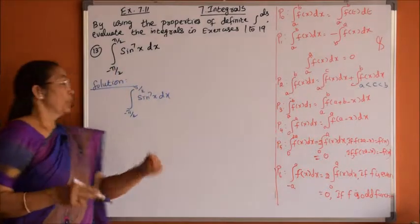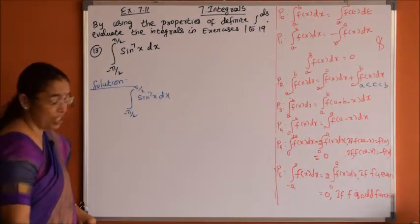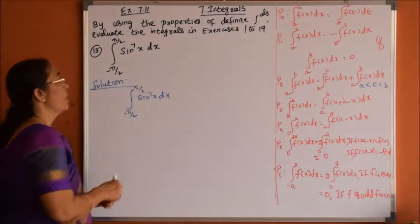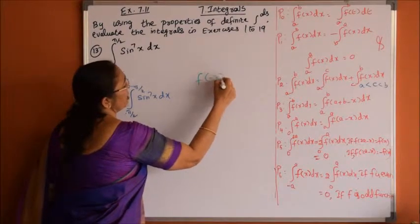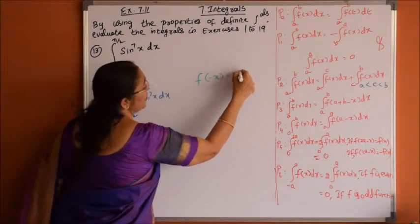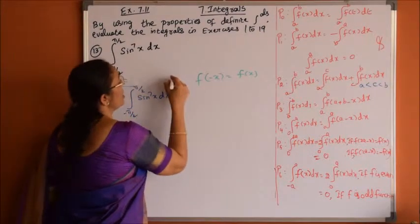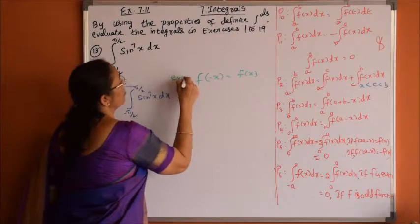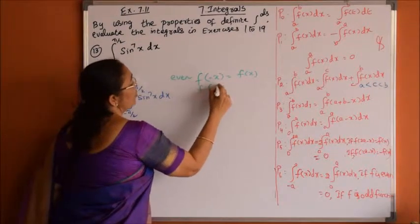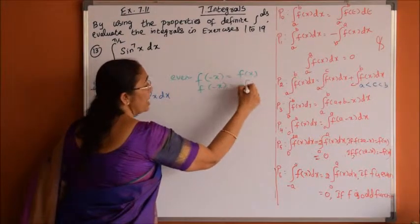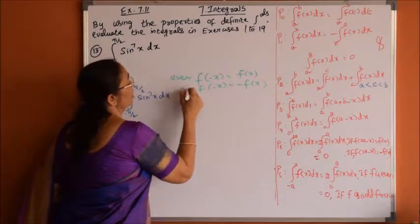The definition: if f of minus x equals f of x, then the function is even. If f of minus x equals minus f of x, then the function is odd.